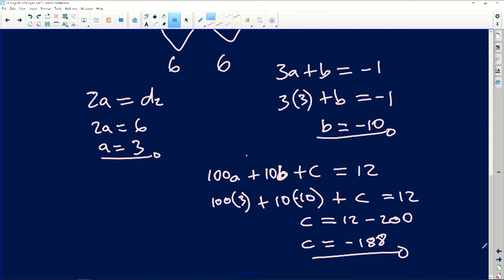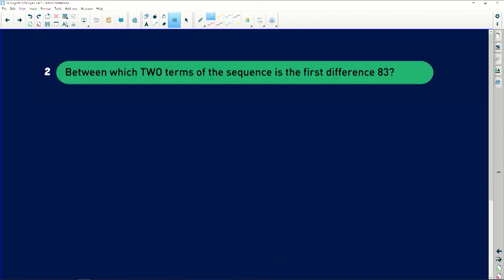Then that's what they wanted us to show: a is 3, b is -10, and c is -188. Mathematics is food for the soul. I hope you guys are enjoying at home as I'm enjoying it. Between which two terms of the sequence is—remember we did this one with the first question, and I said to you it's the same as me saying Tₙ and Tₙ₊₁. But I'm given 83, and 83 is part of the first differences, right? So this is part of the first differences.